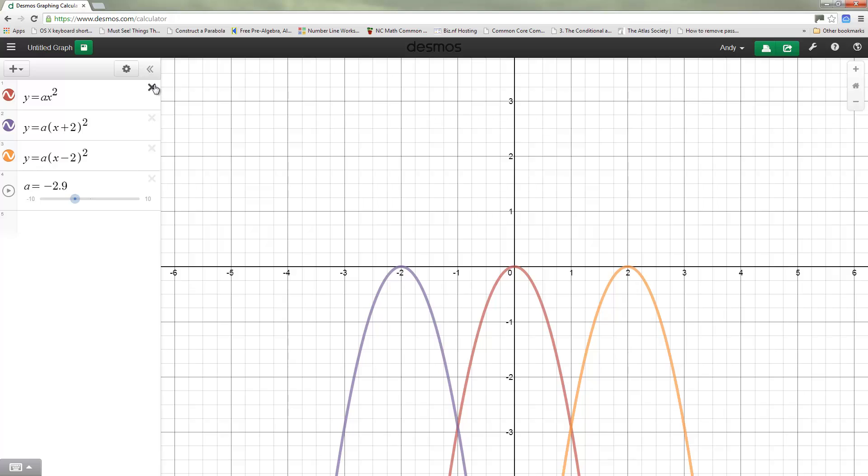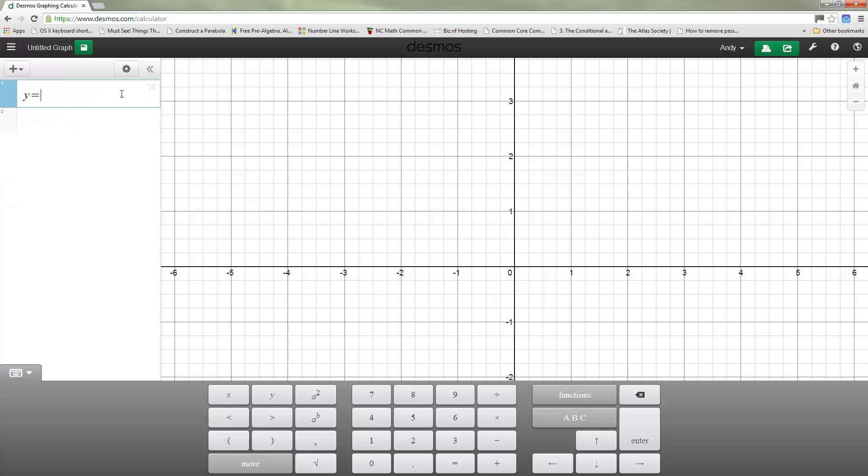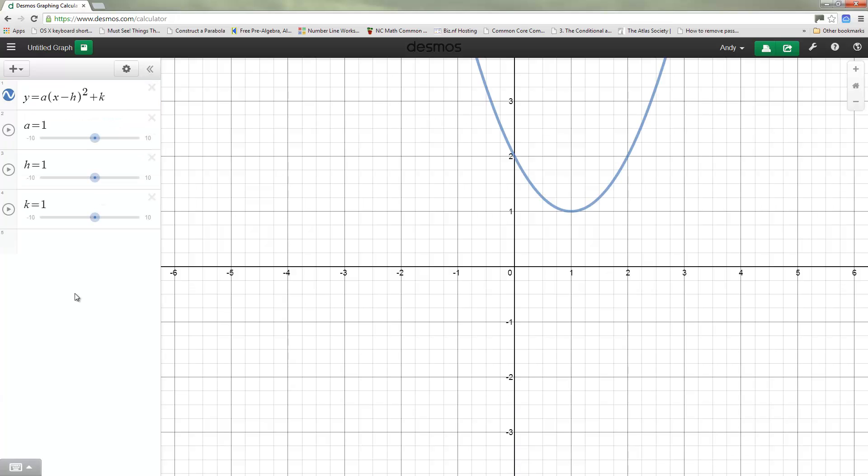Let's put these all together. When we put them all together we have y equals A times x minus h squared plus k. Three sliders, three controls. My claim is that this allows me to move the parabola anywhere I want to in the coordinate grid, any shape I want it to be.